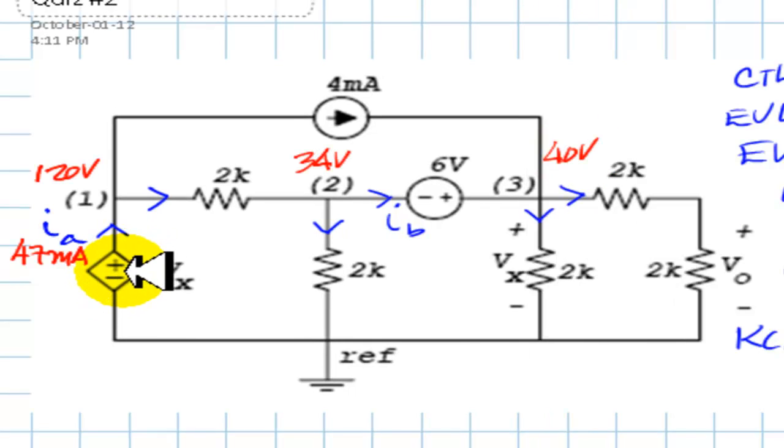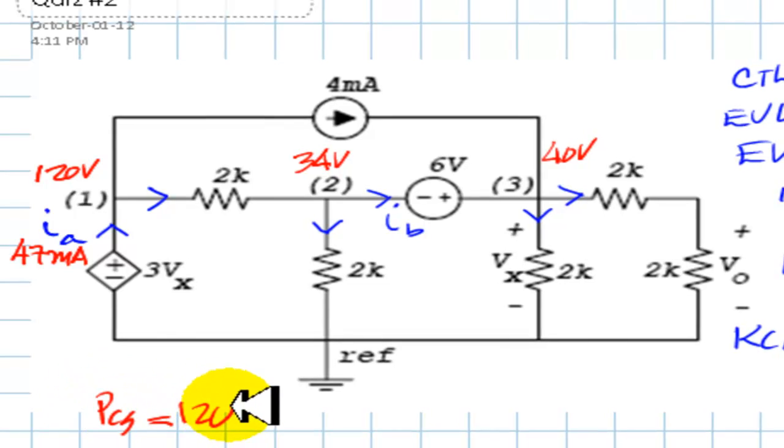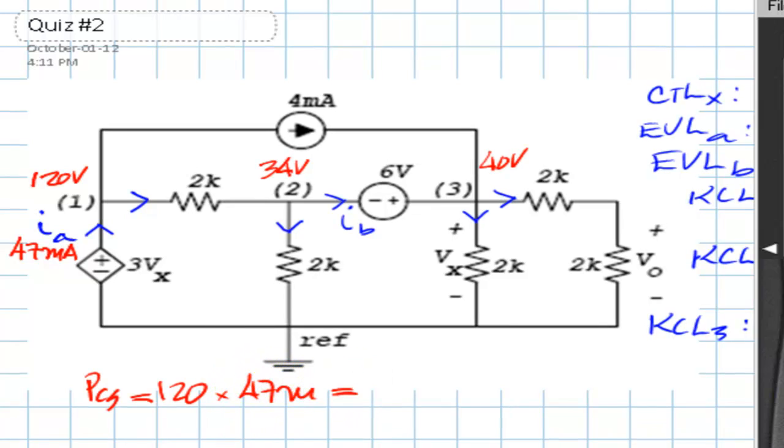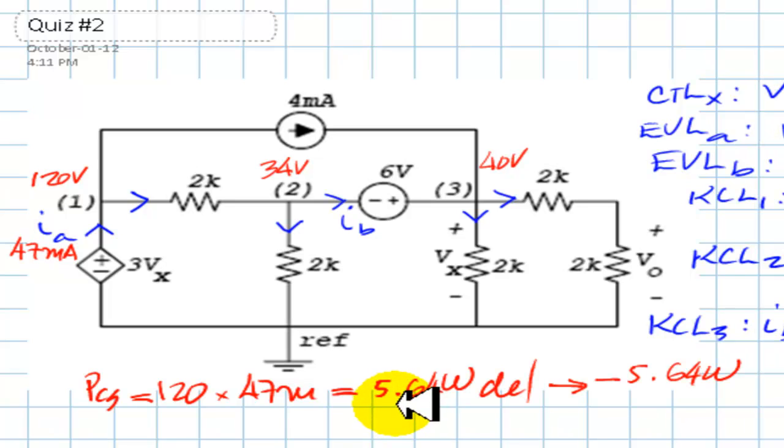We want the power in this source. Well, the power in that source is value of the voltage, of course, is 120 volts multiplied by 47 mA. And that is absorbed power? No. It is delivered power. That source is delivering power. The current is flowing from low to high through it. So the power in the control source is directly 120 multiplied by 47 mA. 5.64 watts delivered power. We write that as 5.64 watts delivered or negative 5.64 watts, which is the Wiley Plus notation negative for delivered power.